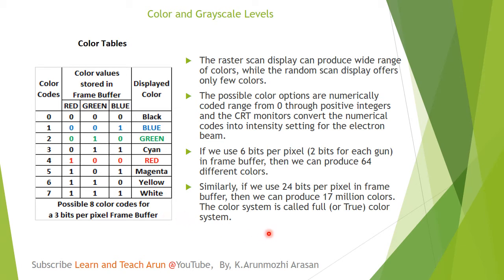Similarly, the frame buffer is 24 bits per pixel. The frame buffer uses 24 bits of memory storage, which gives 17 million colors. This is the true color system, also called the full color system.